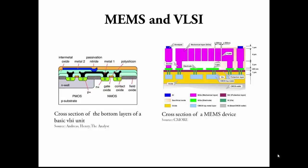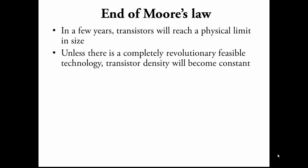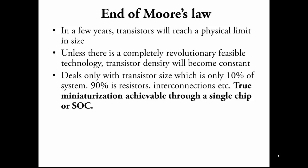According to Moore's law, the number of transistors will double every 18 months. But in a few years, transistors will reach a fundamental limit in size after which only a major change in technology that is also feasible will allow for smaller transistors like quantum computing or carbon nanotubes. Thus transistor density will become more or less constant. But Moore's law deals with only transistors that consists of only 10% of a whole system. The other 90% consists of interconnects, resistors, etc. True miniaturization is thus possible only when all these are scaled down. This is achievable by combining all parts and functions into a single chip called system-on-package.